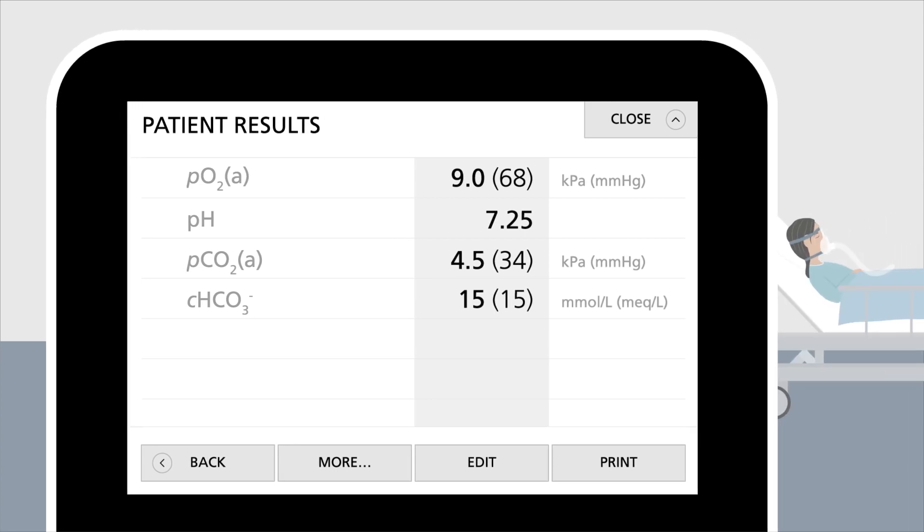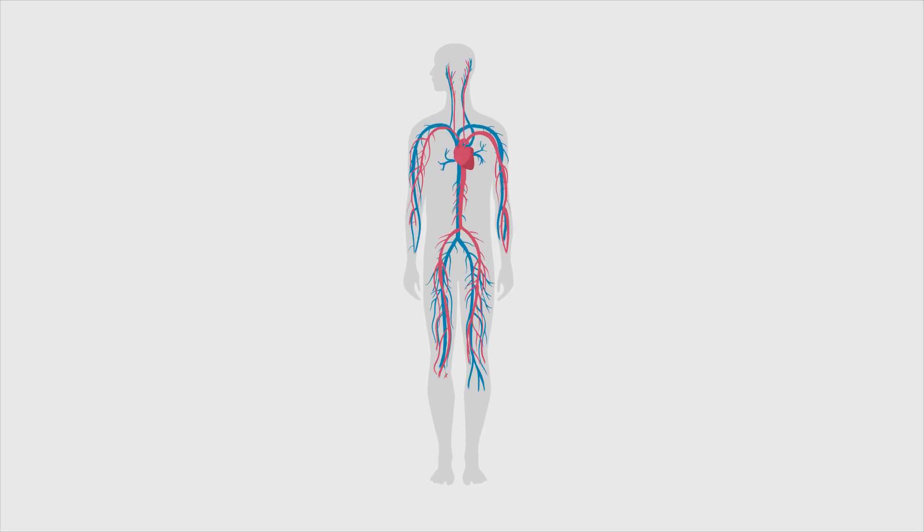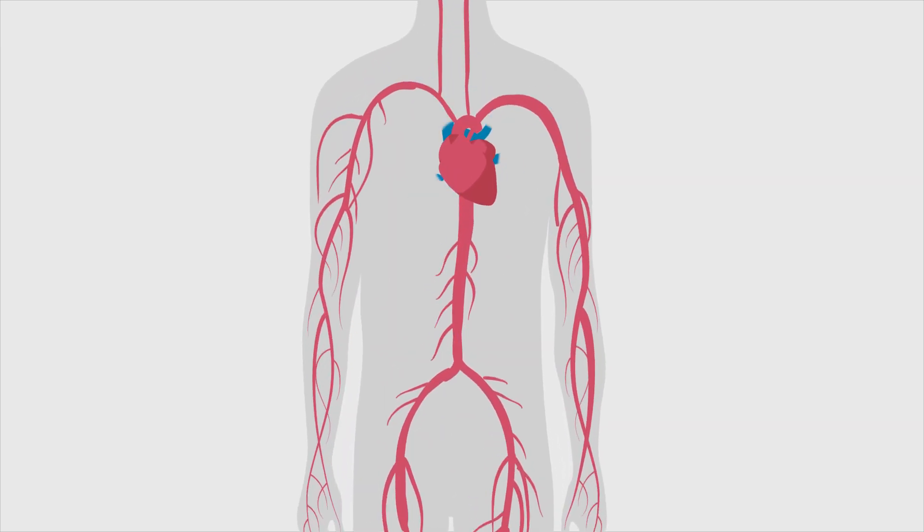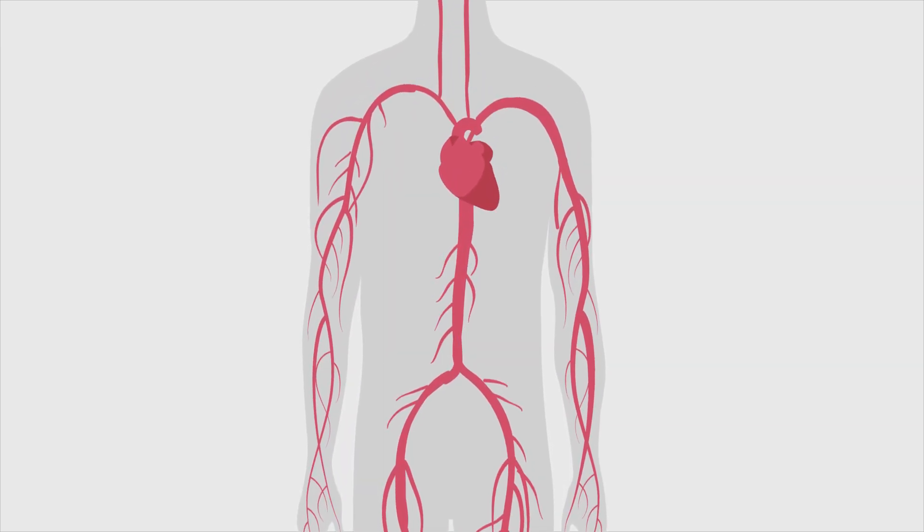The information helps in making diagnostic decisions in order to initiate the right treatment and to monitor the patient's response to the treatment. Since these findings guide your intervention, accuracy is essential, and using arterial blood allows you to assess oxygen status.